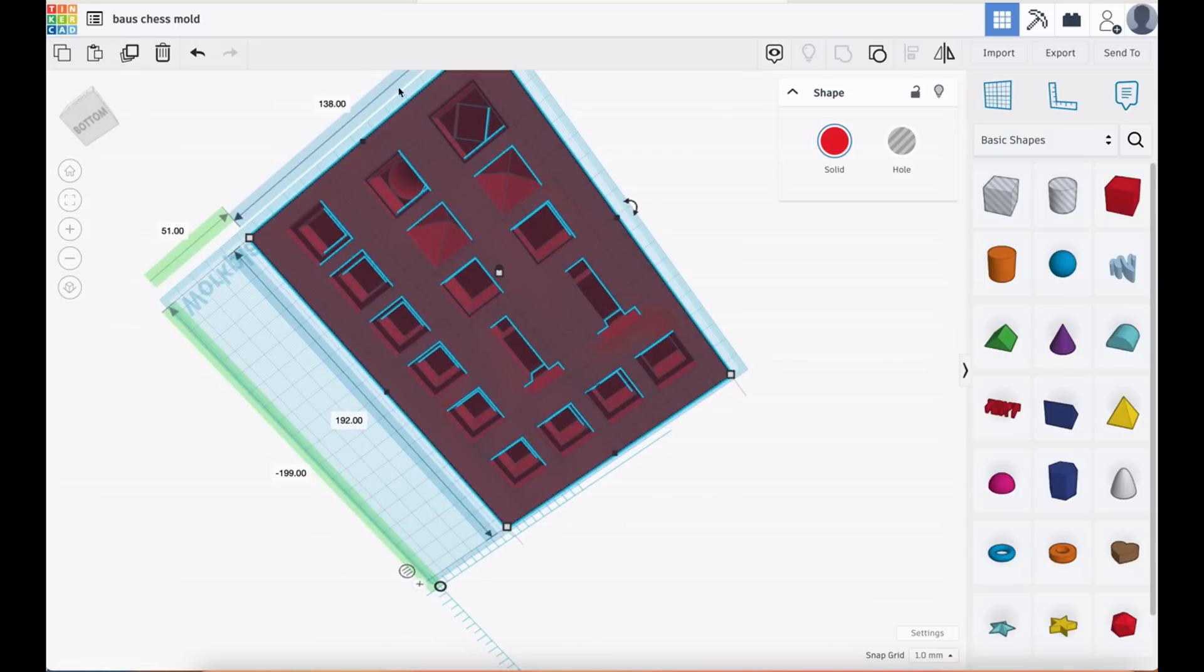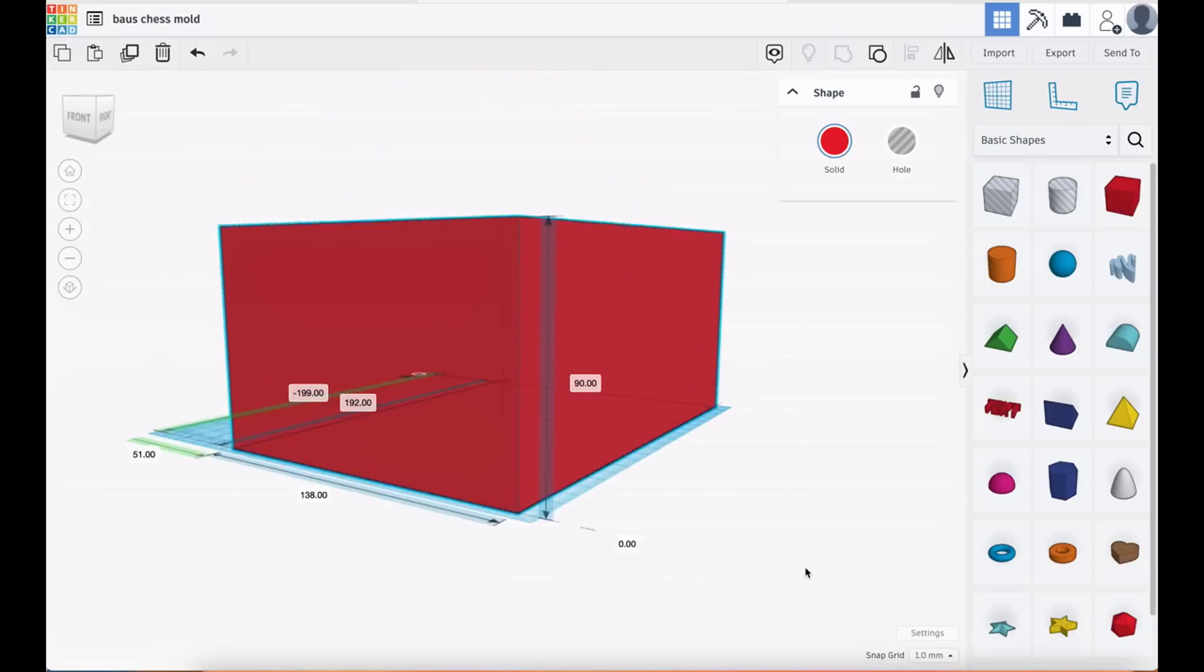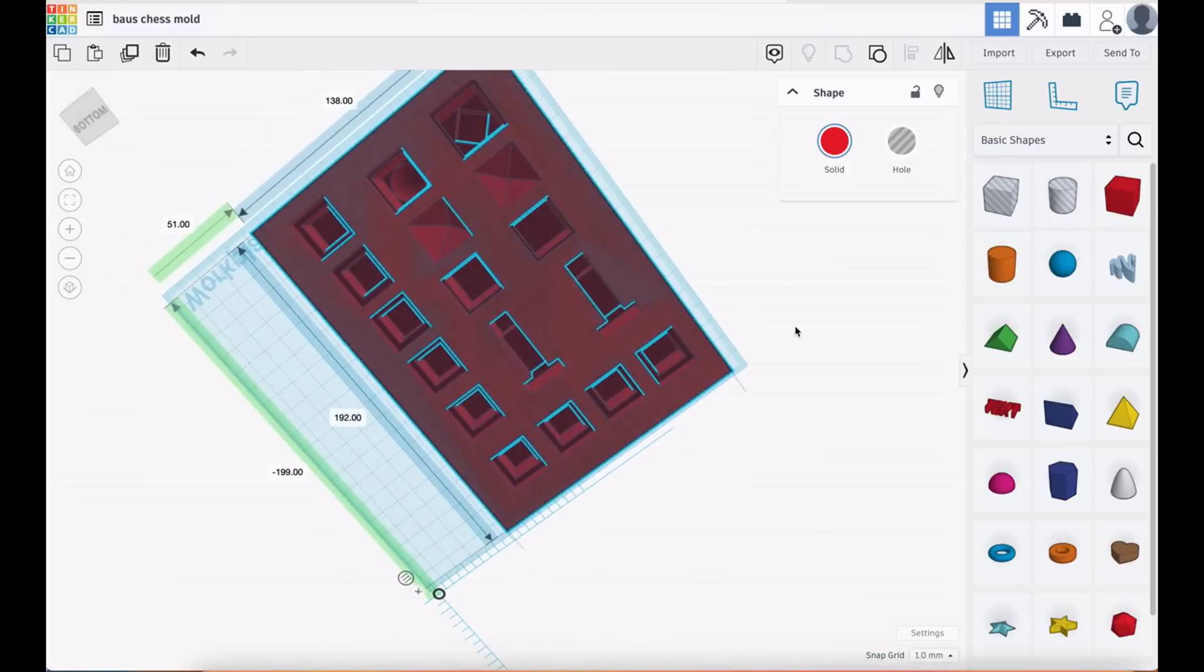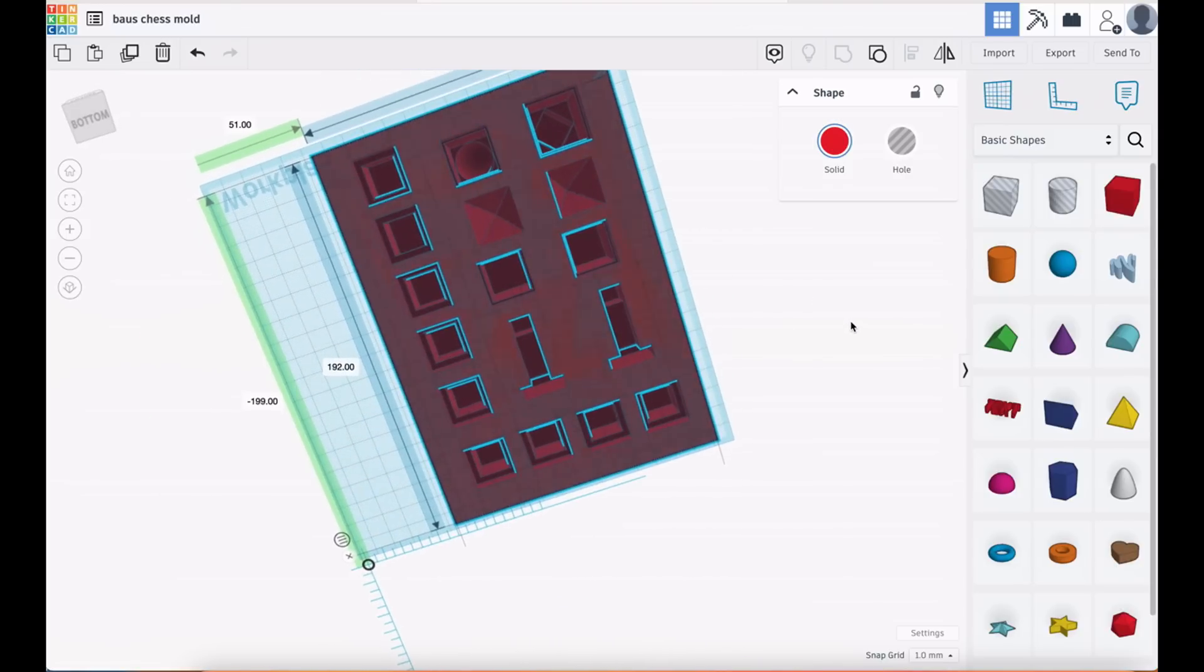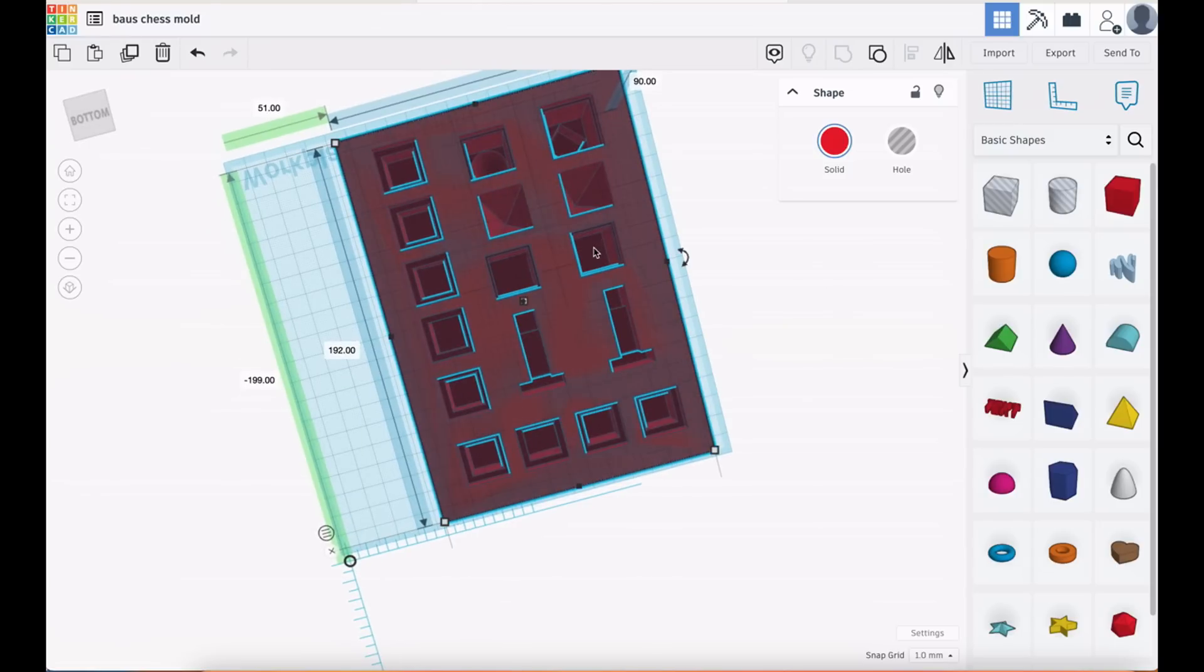And if we spin that round, you see that what we've got here is a mold. It just automatically created a chess set. Now of course it's a Bauhaus set, so they all drop out because there's no overhangs. But we've got a void in here that we can pour anything in and knock out a chess set.